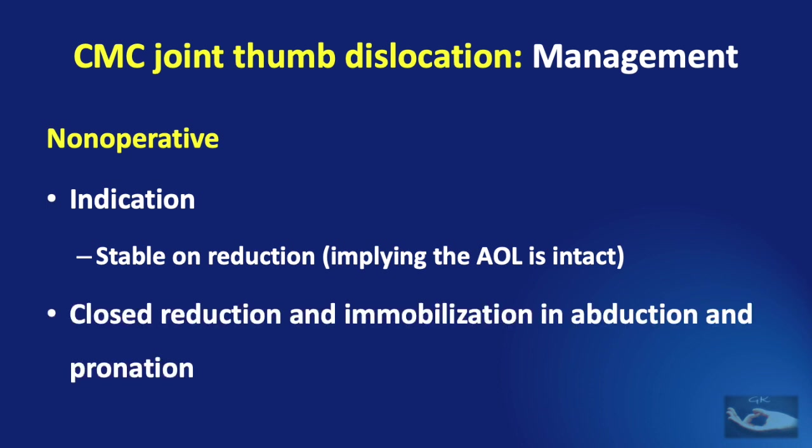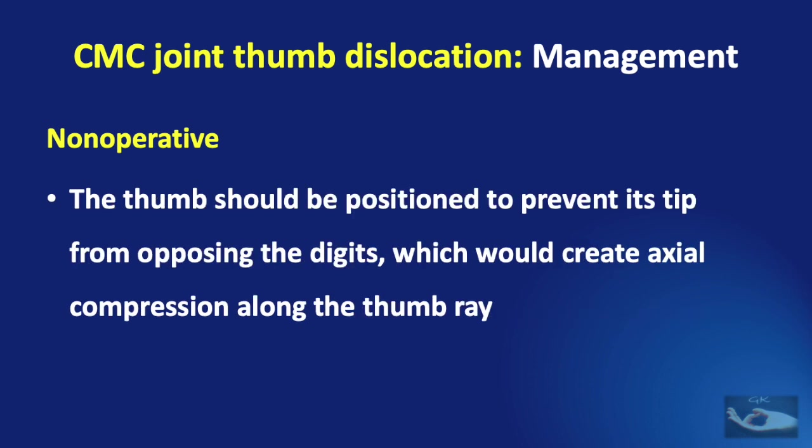After closed reduction, immobilization must be done in a position where the thumb is placed in abduction and pronation. The thumb should be positioned to prevent its tip from opposing the digits, which would create axial compression along the thumb ray.